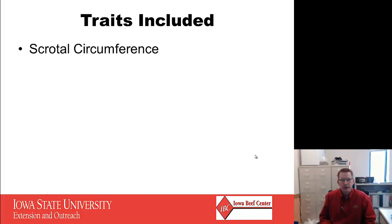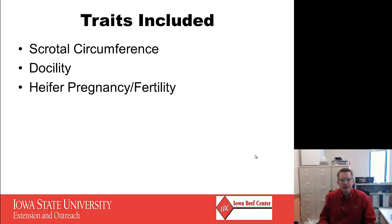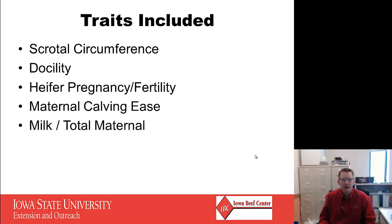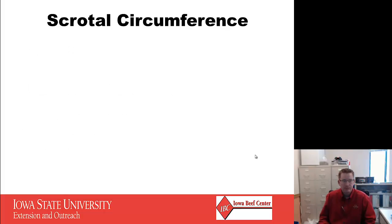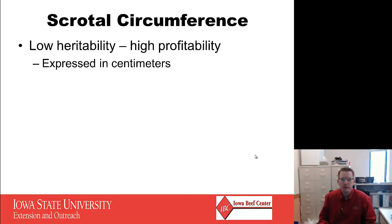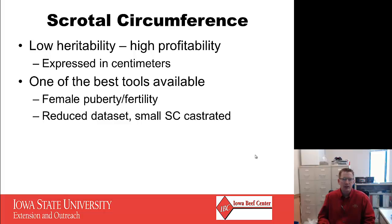The traits included are scrotal circumference, docility, heifer pregnancy and measures of fertility, maternal calving ease, milk or total maternal, and a few others used as indicators. Scrotal circumference is a very low heritability, high profitability trait. It is expressed in centimeters, obviously in bulls only, but it's one of the best tools available to assess female puberty and fertility.